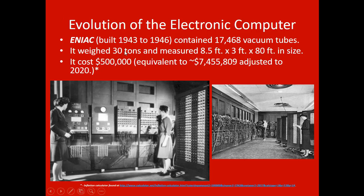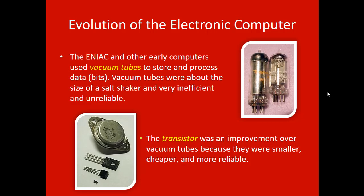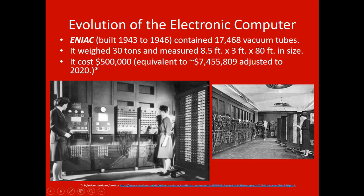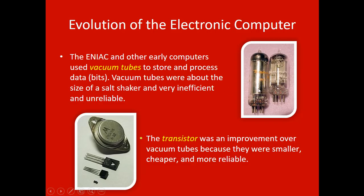So this was the first electronic computer — it was built, it did go into service, and I've got a link down here. You have the PowerPoint slide on Blackboard. If you look down in the notes, you'll see links out to stories about this and how this thing actually functioned. The brain of it ran off of something called vacuum tubes. As you look in the picture, the central processing unit contained about 17,000 to 17,500 vacuum tubes. Vacuum tubes look like a light bulb — and this was the brain.